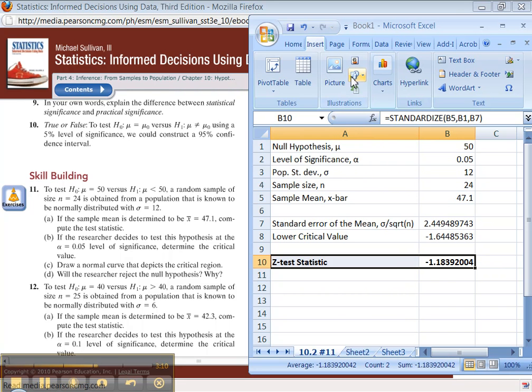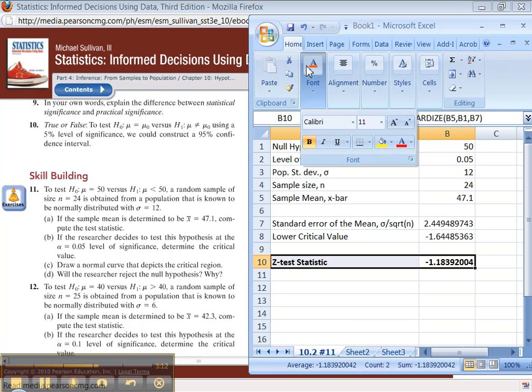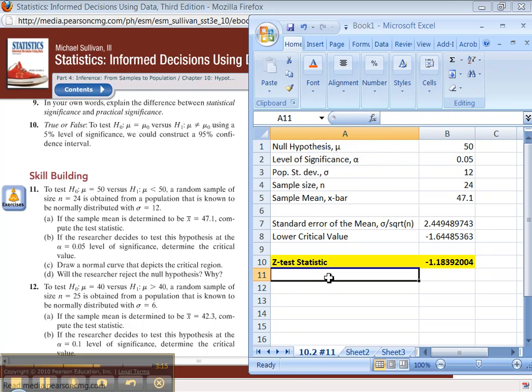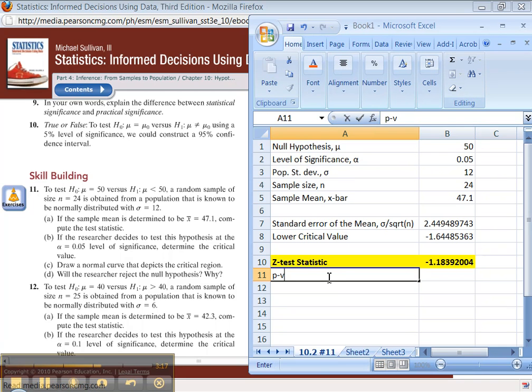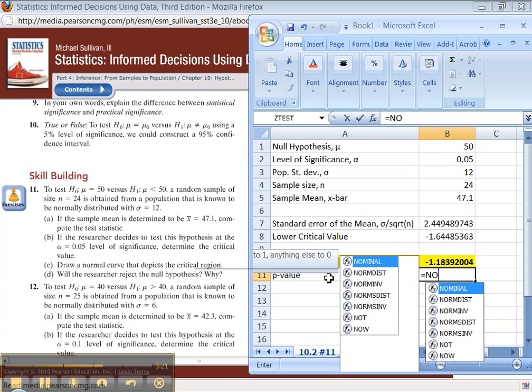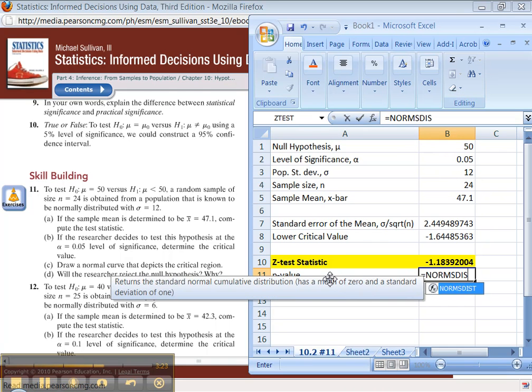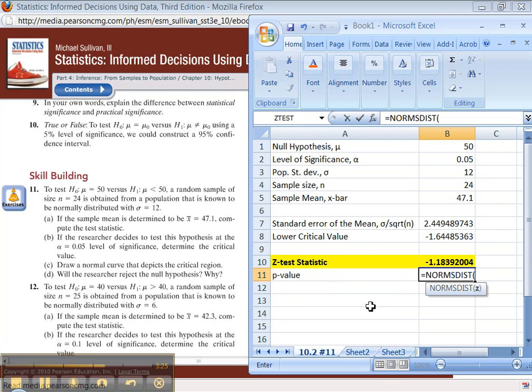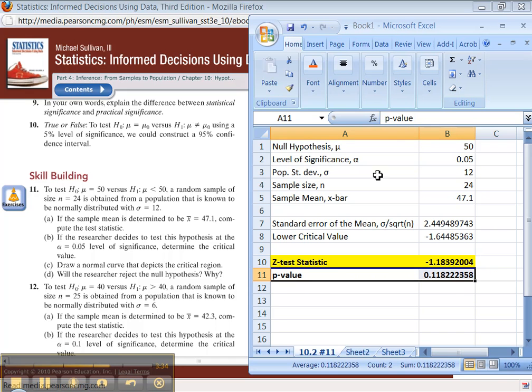I know the problem didn't ask for this, but I'm going to find this anyway just so you know how. The p-value would be NORM.S.DIST of that value, the z-test statistic. That's the p-value, just in case you wanted to know that.